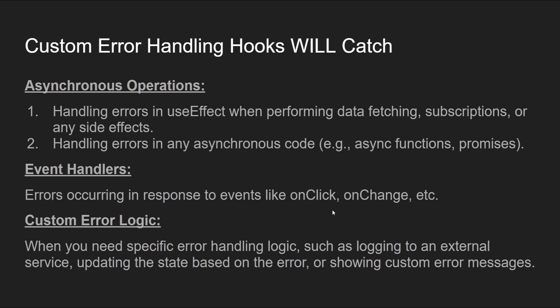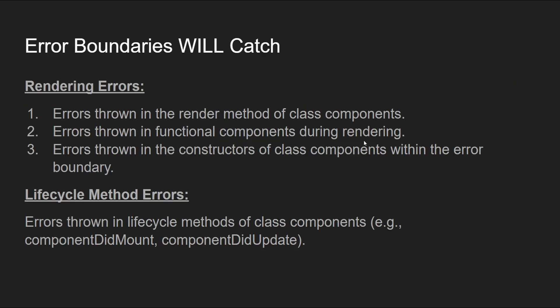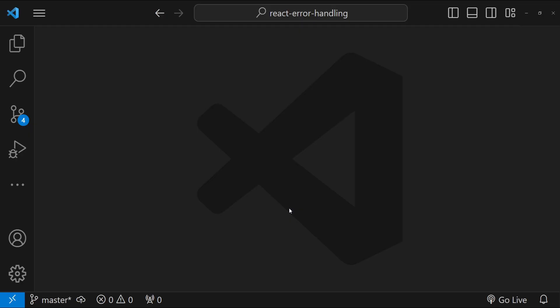Reusable custom error handling hooks can also catch errors from incorrect state updates in your components, and handle errors in custom hooks used across different components. The errors that custom error handling hooks will not catch are the ones error boundaries do catch — rendering errors will not be caught by custom hooks, nor will lifecycle method errors, since lifecycle methods are specific to class components and hooks can only be used with functional components.